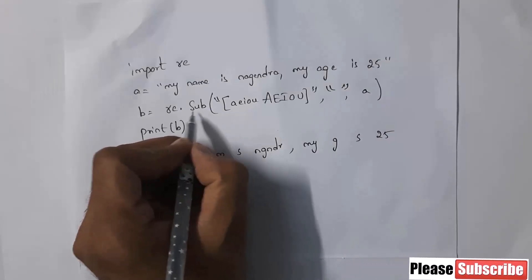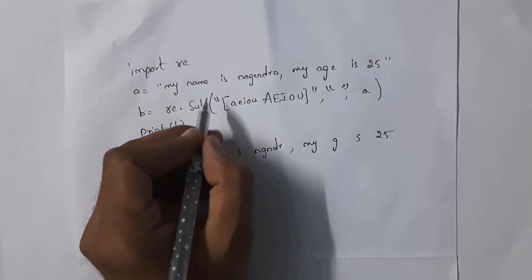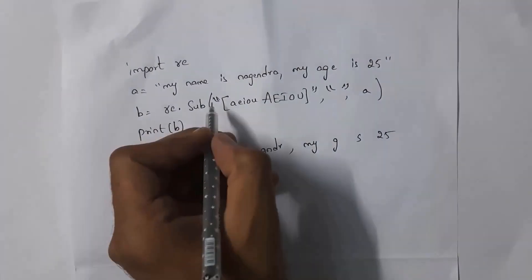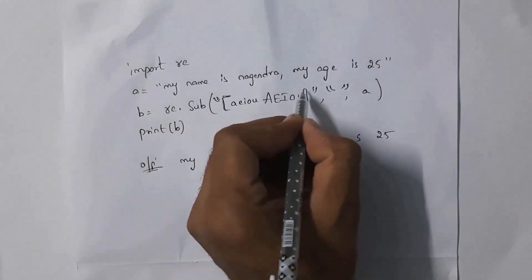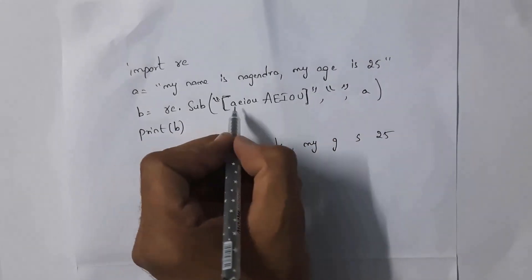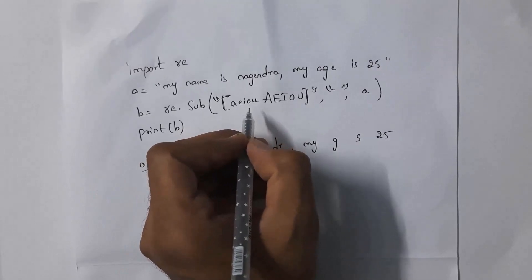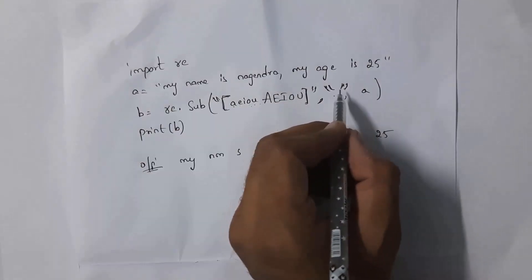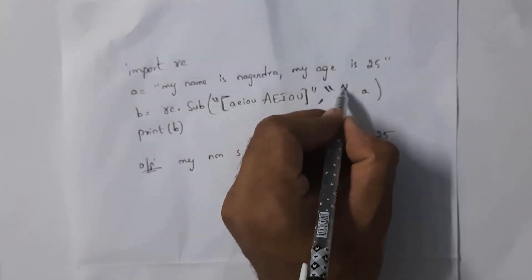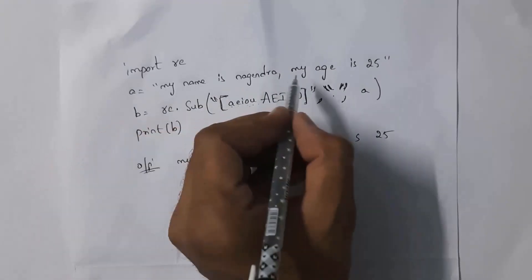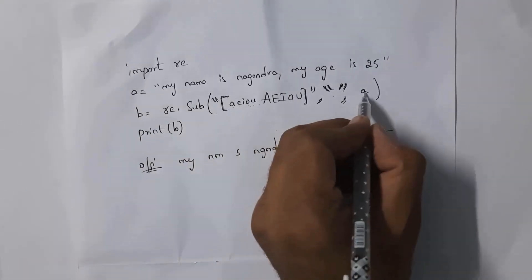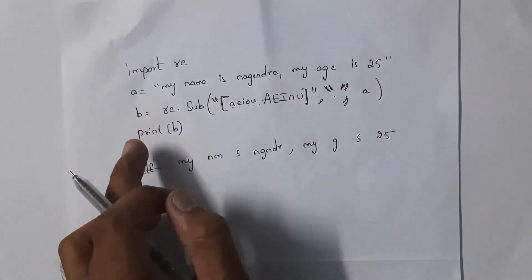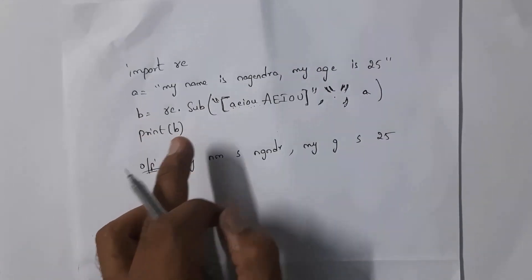Next, write a Python program to remove vowels from given text. Use the substitute function — re.sub. Inside sub, write a character class in square brackets: [aeiouAEIOU] — both lowercase and uppercase vowels. The replacement string is empty quotation marks with no space. The string is in variable a. When you print b, you will get the output with all vowels removed.